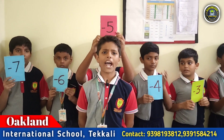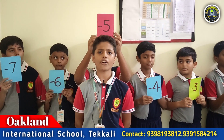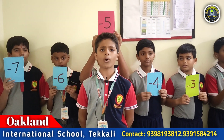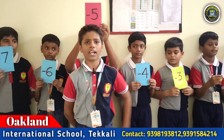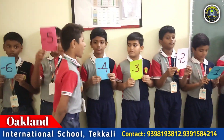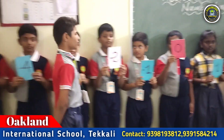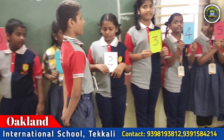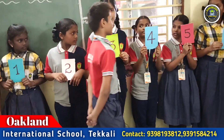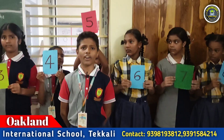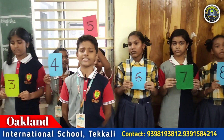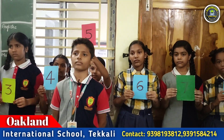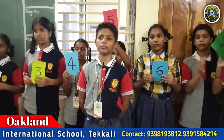We should add plus ten. Plus ten is a positive integer, so we should move ten steps right side on the number line. One, two, three, four, five, six, seven, eight, nine, ten. So minus five plus ten is equal to plus five. It's the correct answer.